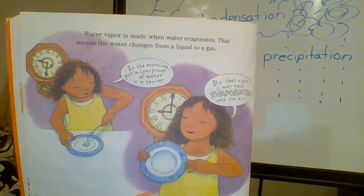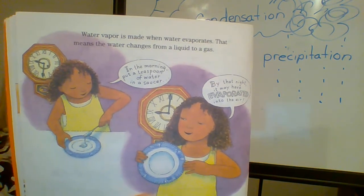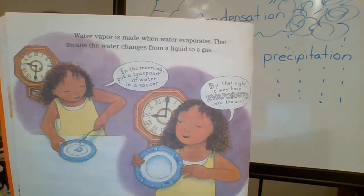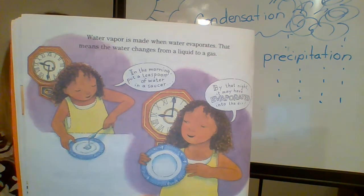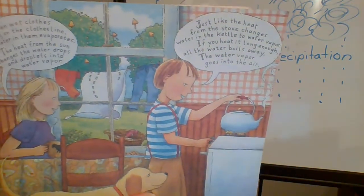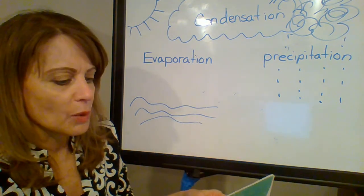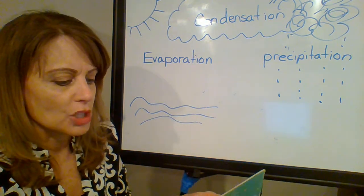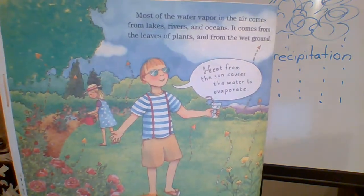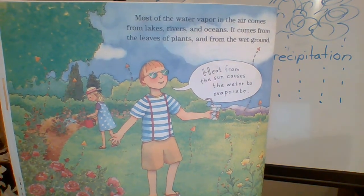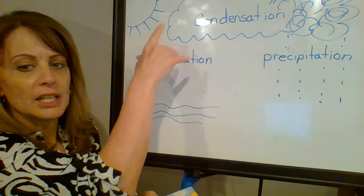When wet clothes hang on the clothesline, the water in them evaporates. The heat from the sun changes the water drops and droplets into water vapor, just like the heat from the stove changes water in the kettle to water vapor. If you heat it long enough, all the water boils away. Most of the water vapor in the air comes from lakes, rivers, and oceans. It comes from the leaves of plants and from the wet ground. Heat from the sun causes the water to evaporate — the water changes from a liquid to a gas and the water vapor goes into the air, just like we were talking about here with evaporation.